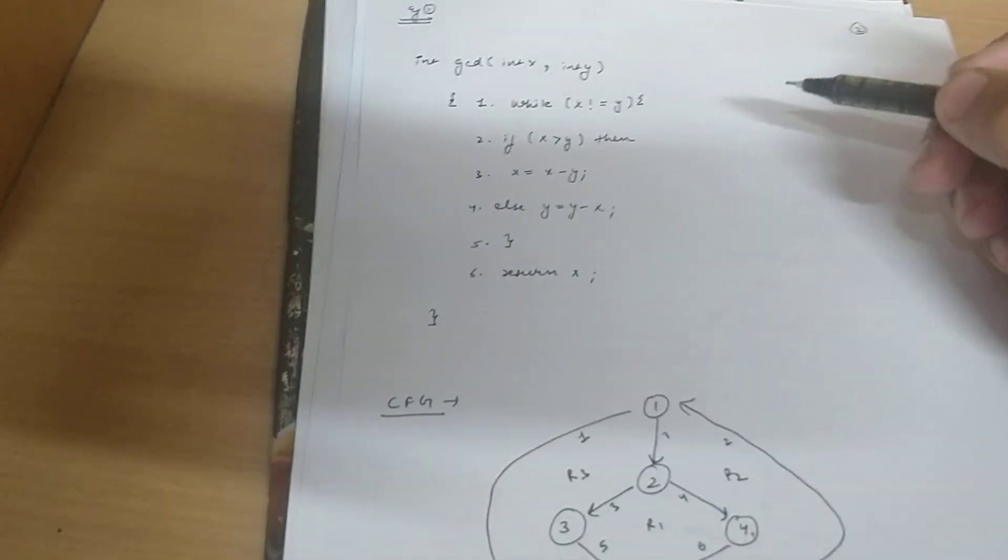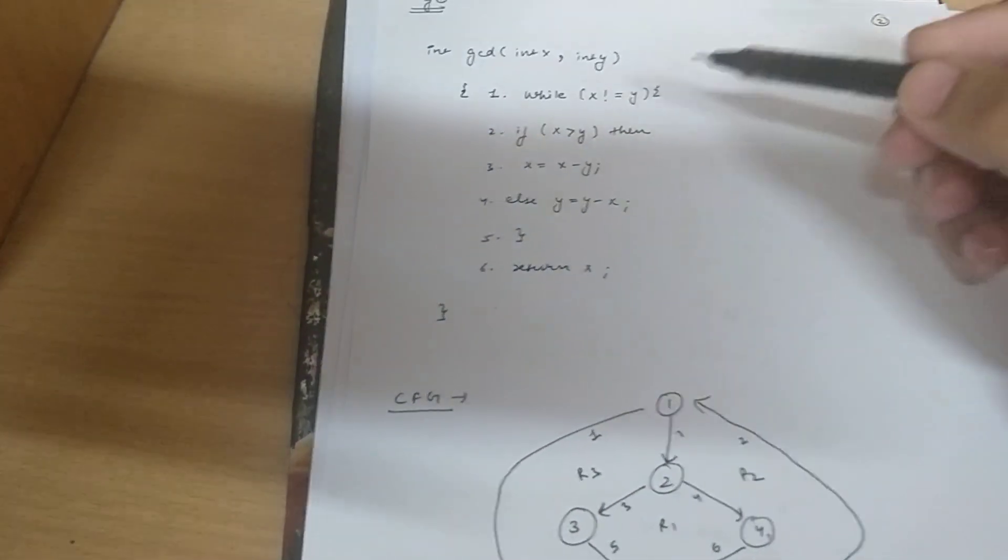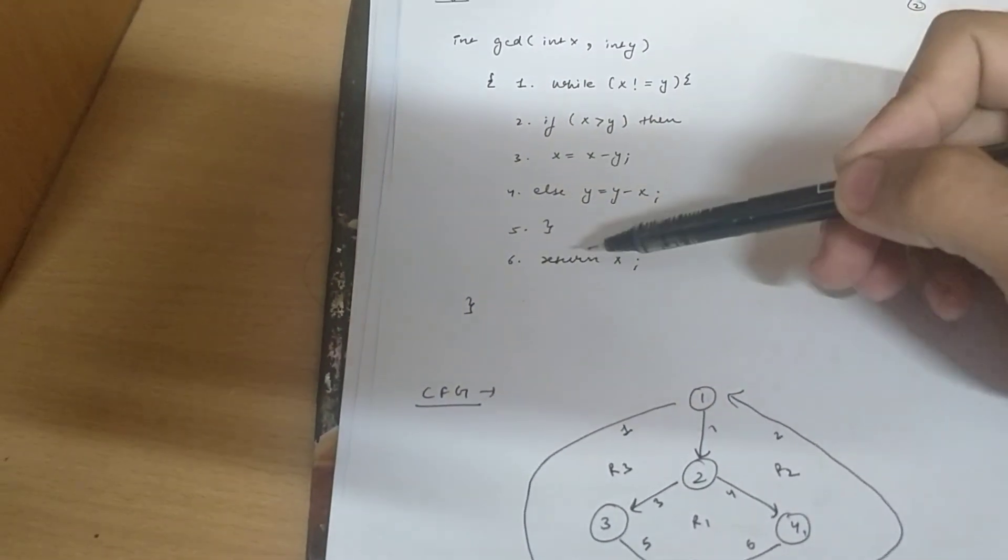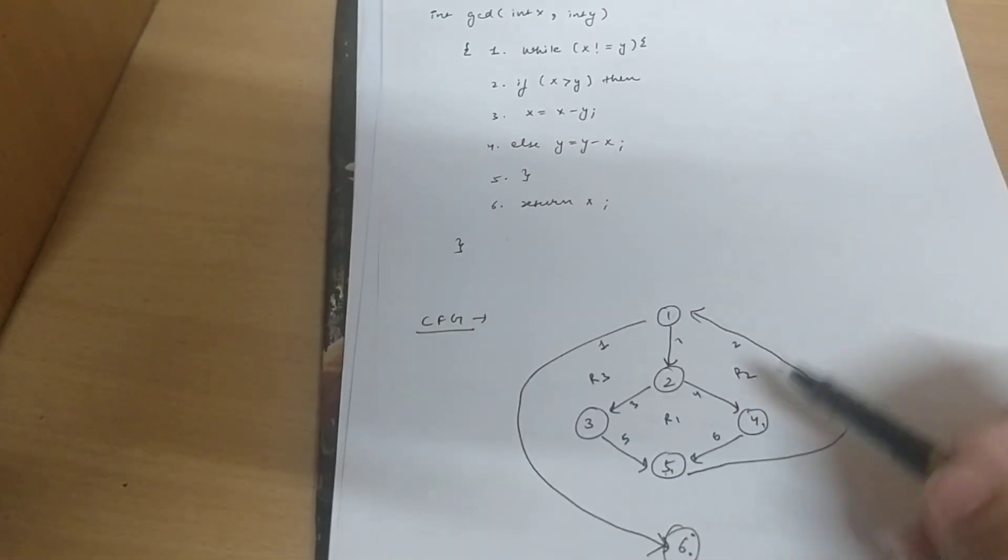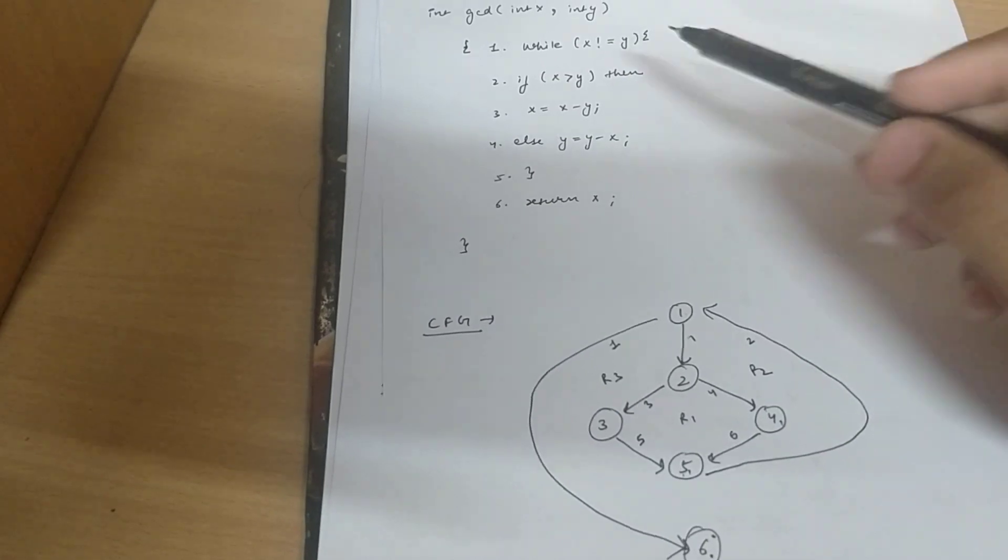This is a basic C example. I have numbered each step of this program from 1 to 6. And from this numbering, I have drawn the control flow graph here. We will start with the first number which is a while loop.